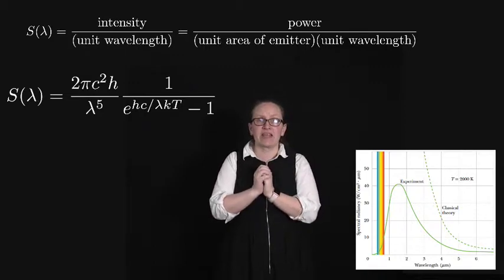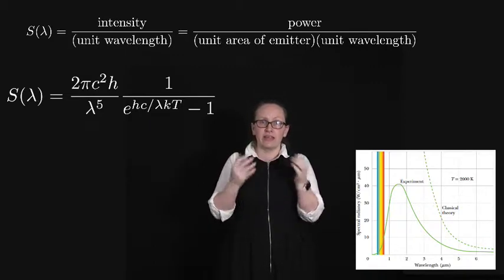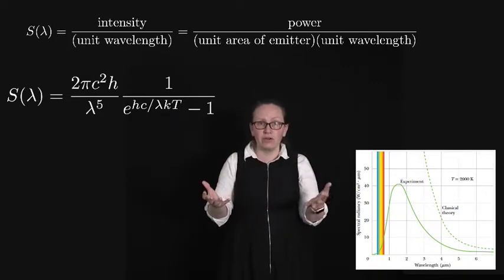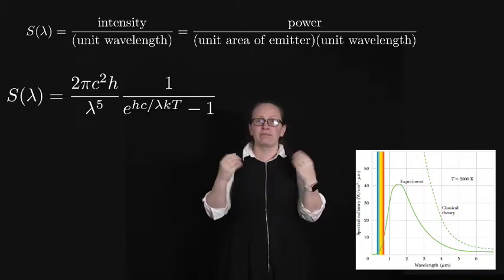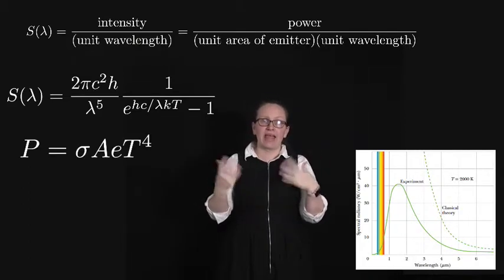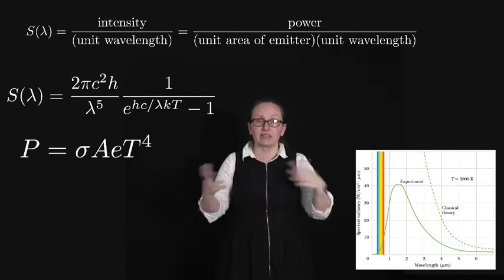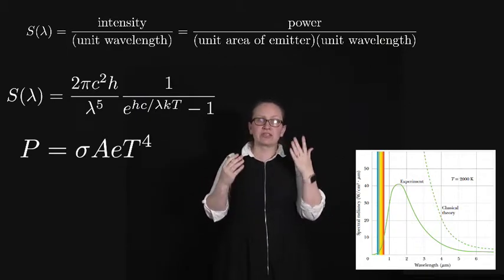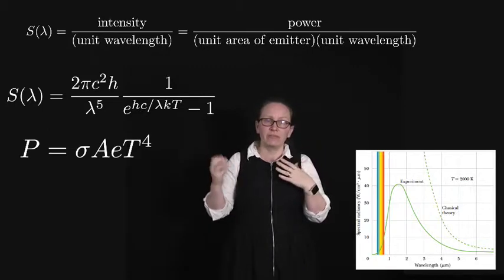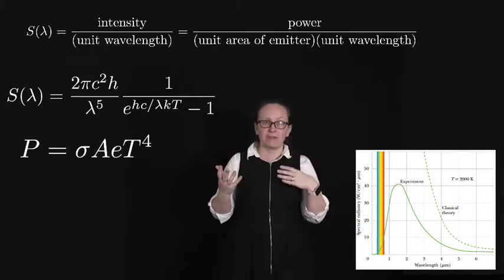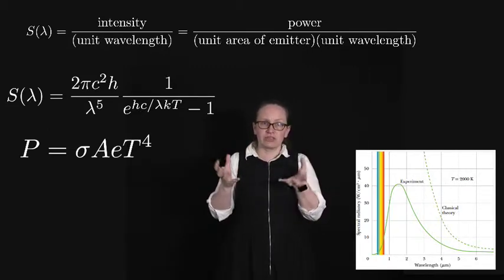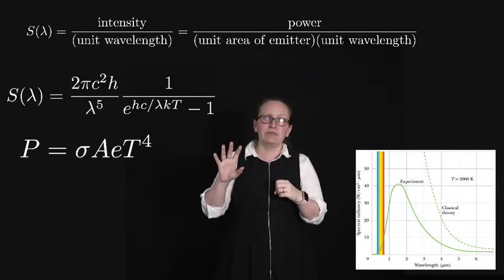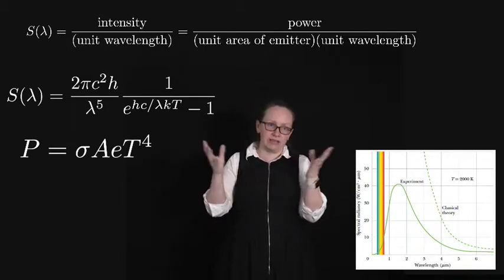Another thing that we can actually get from Planck's equation is the equation that we've looked at before for the amount of power emitted by a blackbody radiator. We were looking at this in the thermal topic and we saw that P = σAeT⁴ where σ was the Stefan-Boltzmann constant, A was the surface area of the emitter, e was the emissivity and T was the temperature.